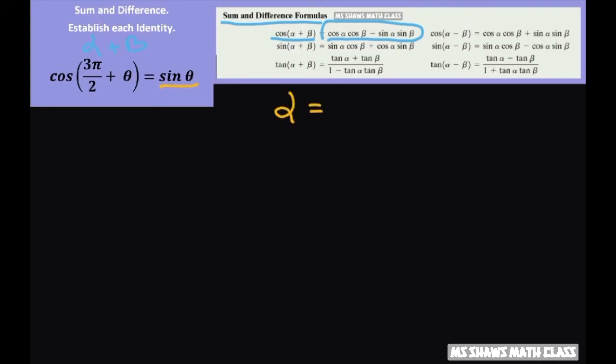In our case, our alpha equals 3π divided by 2 and our beta equals theta.